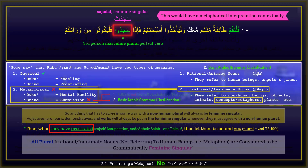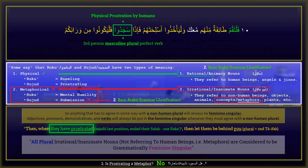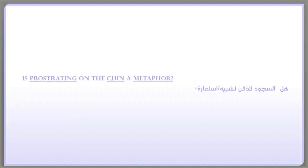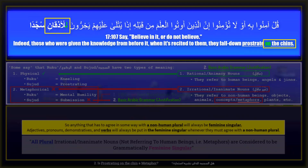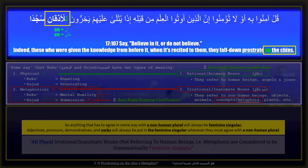There is actually much more to back this up. This will answer another related question: is prostrating on the chin a metaphor? As the verse states: 'Say, believe in it or do not believe. Indeed, those who were given the knowledge before it, when it is recited to them, they fall down prostrate on the chins.' — وَإِذَا تُتْلَى عَلَيْهِمْ يَخِرُّونَ لِلْأَذْقَانِ سُجَّدًا. I translated لِلْأَذْقَانِ as 'on the chins' and not 'to the chins,' even though عَلَى — 'on' — is not mentioned explicitly.